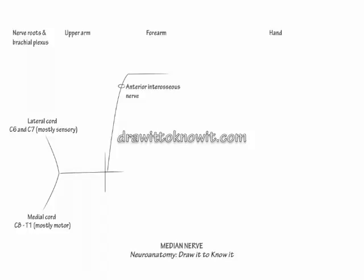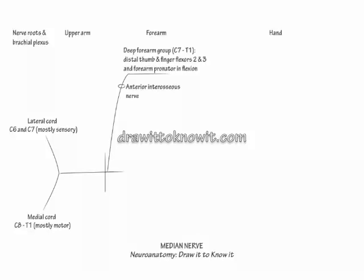Now, draw the anterior interosseous nerve branch. Show it innervates the deep forearm muscle group derived from roots C7 to T1, which comprises flexor pollicis longus, pronator quadratus, and flexor digitorum profundus 2 and 3.